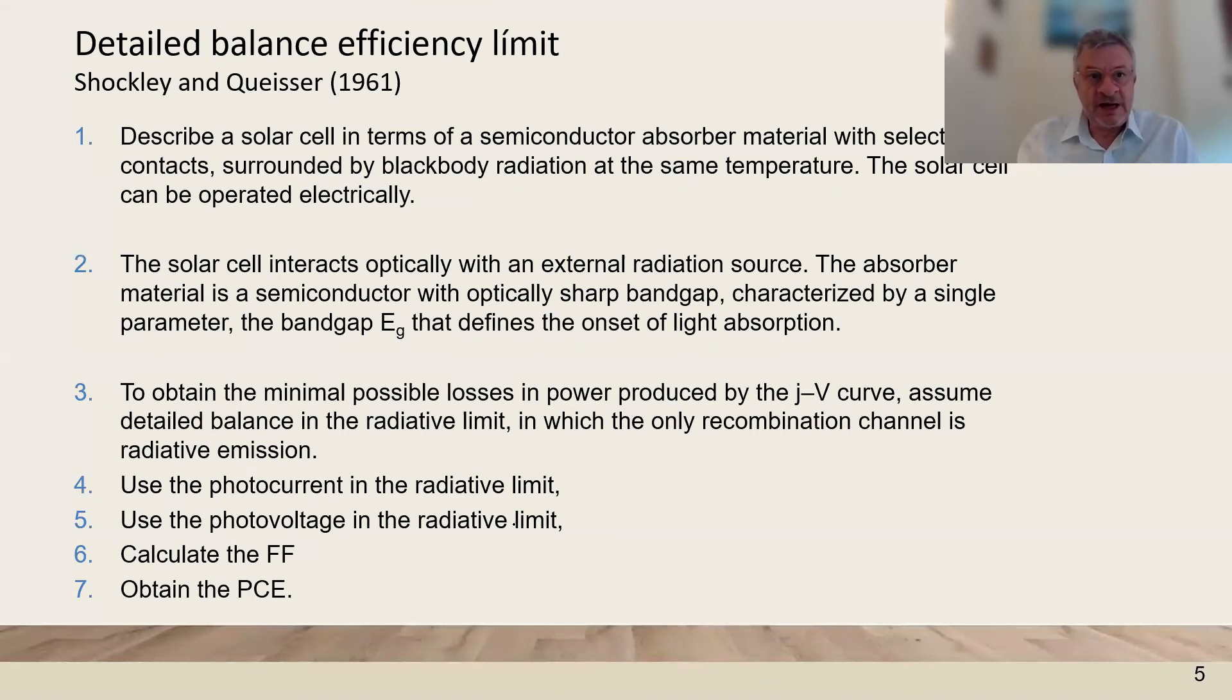So there is this method, which is based on the detailed balance principle to obtain, given a band gap, the maximum power that the solar cell can provide. We consider the fundamental model, it's surrounded by black body radiation and the solar spectrum. The absorber material is a semiconductor with a sharp band gap. And the only parameter that defines the absorber is the band gap, because it will absorb all the photons when they impact the solar cell.